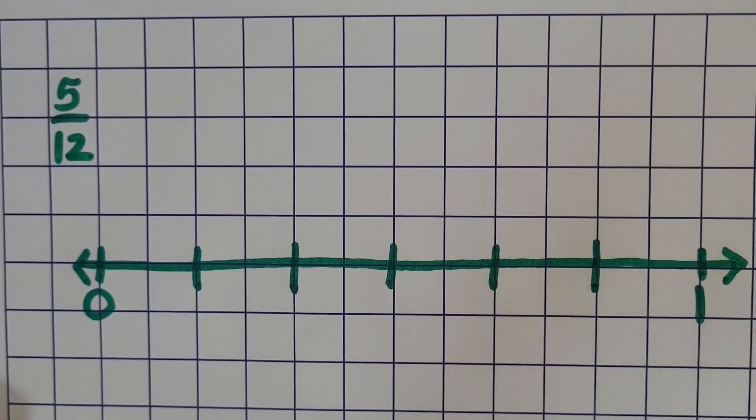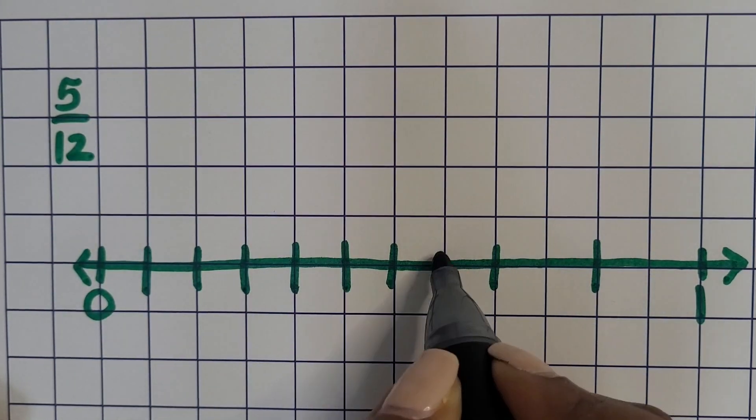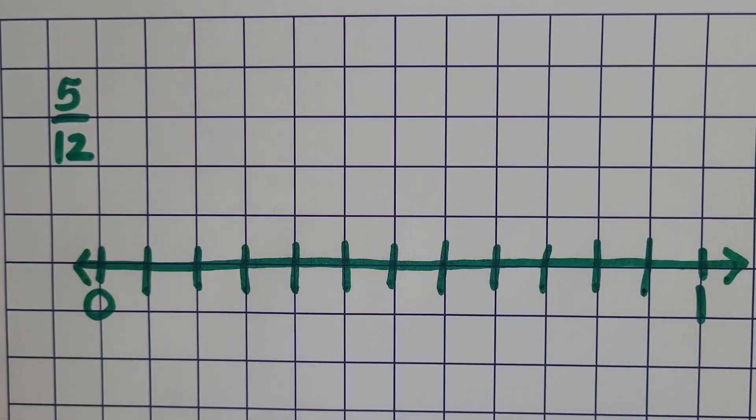So three on one side, three on the other, there's six equal parts. Now we're going to partition each six in half to create twelfths.